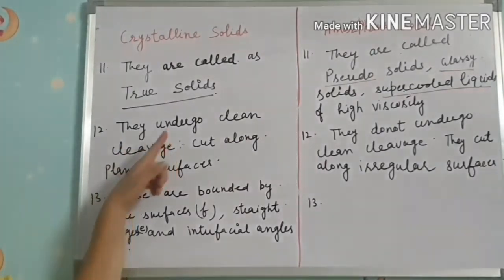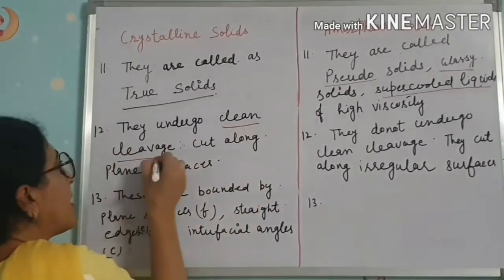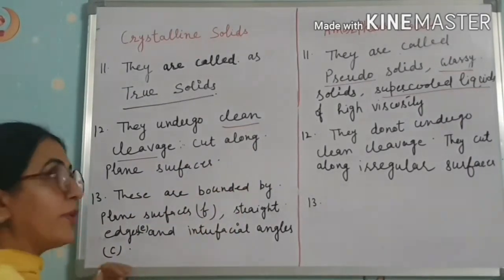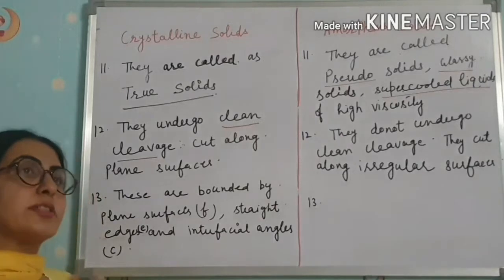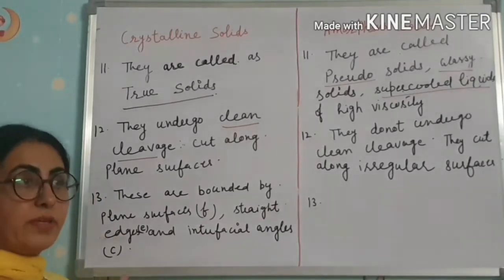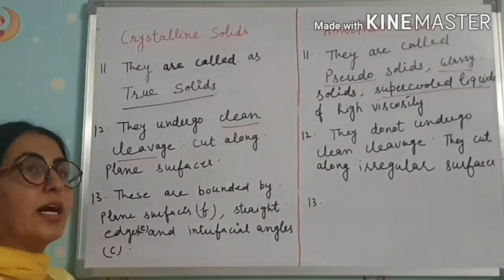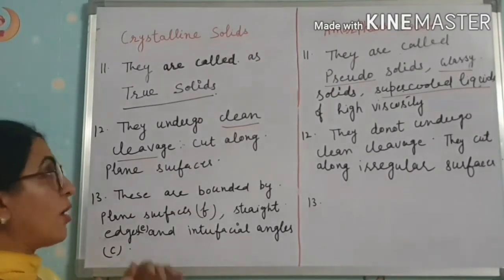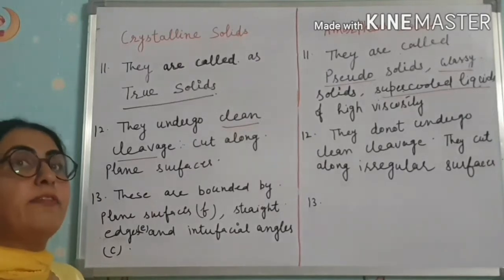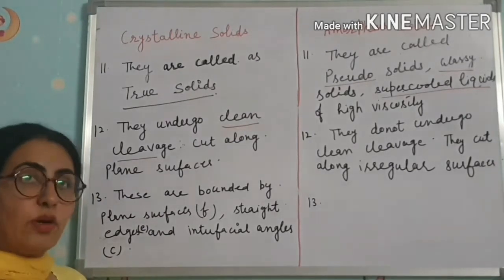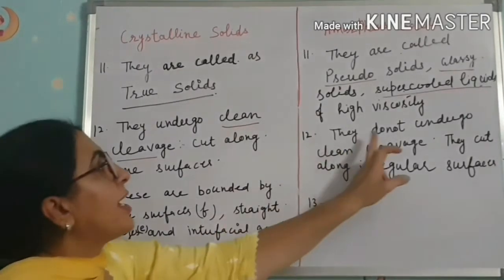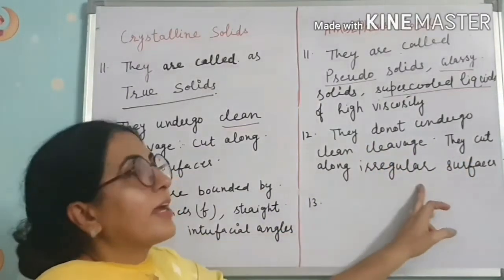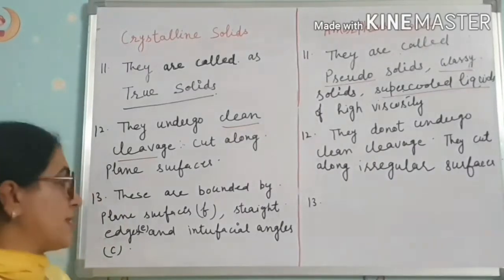The twelfth point: crystalline solids undergo clean cleavage — they cut along plain surfaces. For example, when we cut a diamond with a diamond cutter, we cut along the crystallographic axis. This cutting of a crystal is called cleaving of the crystal. Amorphous solids do not undergo clean cleavage; they cut along irregular surfaces.